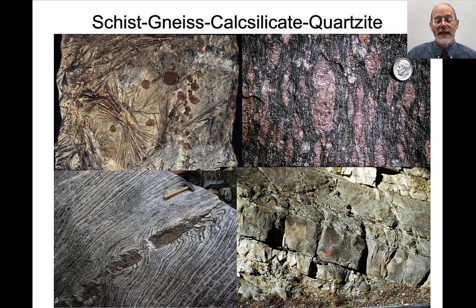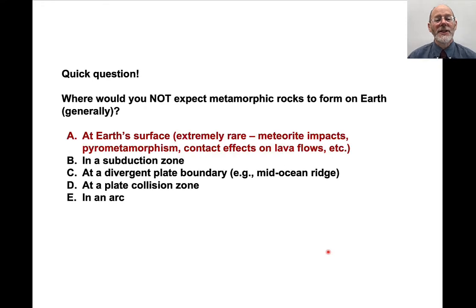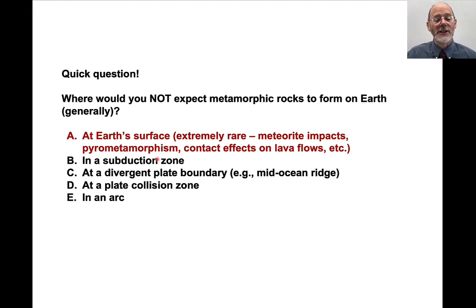A massive quartzite from Great Smoky Mountains National Park represents metamorphosed sandstones. As for where you would not expect metamorphic rocks to form — Earth's surface is mostly excluded, though meteorite impacts create high-pressure minerals, pyrometamorphism occurs when coal seams catch fire, and lava flows create contact effects. Metamorphic rocks are very common in subduction zones, at mid-ocean ridges due to hydrothermal activity, in plate collisions, and also in arcs through contact metamorphic effects.